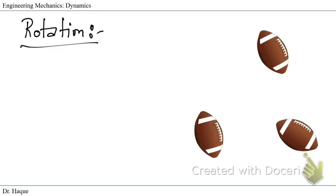For rotation, you need an axis. Assume there is an axis and the football is rotating along that axis. When a rigid body rotates about a fixed axis, we can call that axis the PP1 axis. The ball is rotating along the PP1 axis. This is called rotation about a fixed axis.